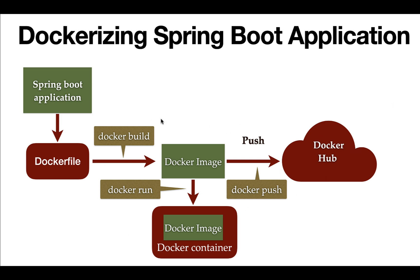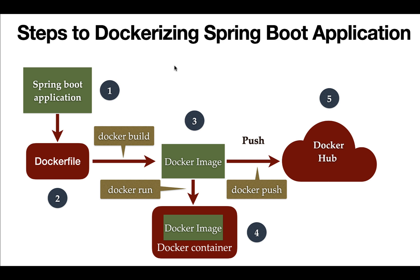In the next lectures, we'll see how to dockerize a Spring Boot application step by step. First, we'll create a Spring Boot application and build some REST APIs. Next, we'll create a Dockerfile and define all the instructions to build the Docker image. Then we'll create a Docker image from the Dockerfile, run it in a Docker container, and finally push the Docker image to Docker Hub. I'll see you in the next lecture.